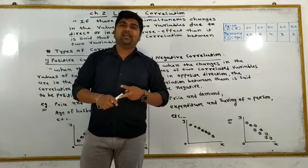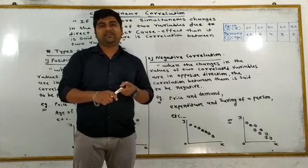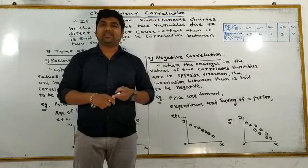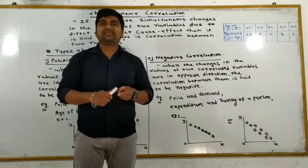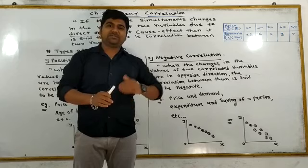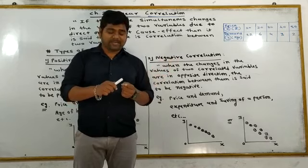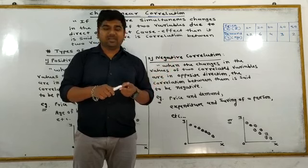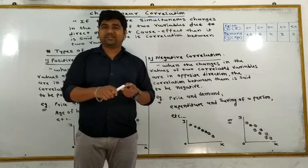For example, price and supply. If price increases, then supply increases — same direction. Similarly, if price increases, then demand decreases — opposite direction. If price decreases, then demand increases — again opposite direction.